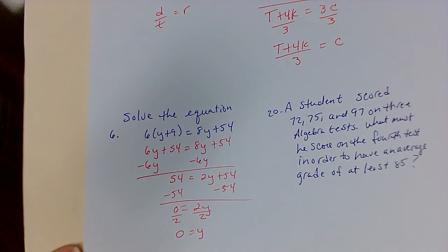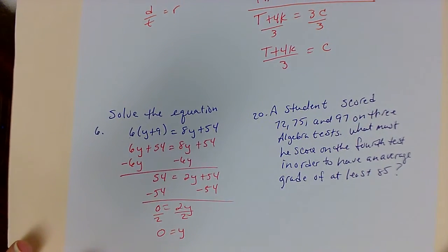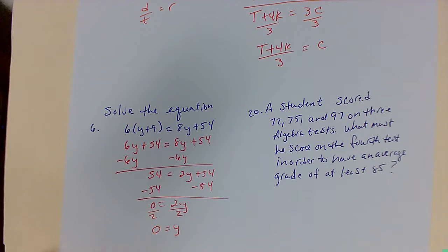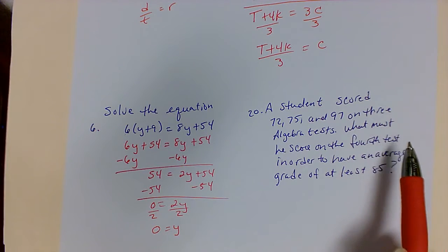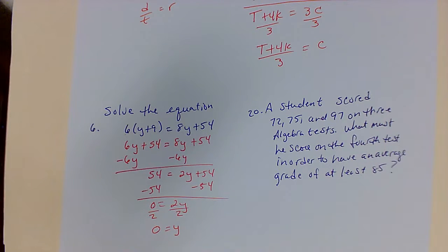The next question is number 20. It's a word problem where a student scored 3 test grades and we need to figure out what he must score on the 4th test to have an average grade of at least 85.